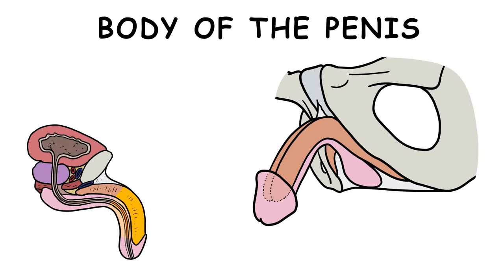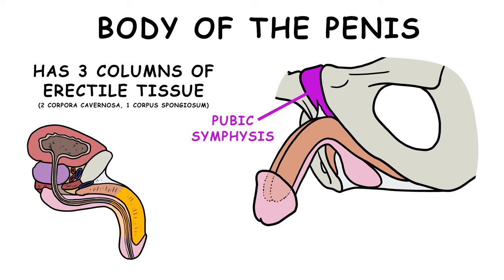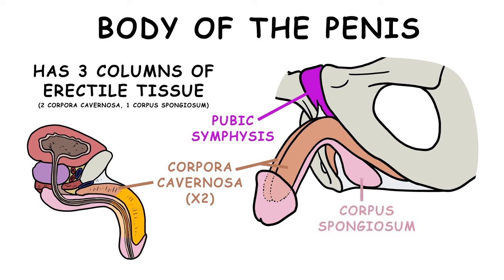The body of the penis is suspended from the pubic symphysis, which is a joint between your right and left pelvic bones. It is composed of three columns of erectile tissue. Extending from the two crura in the root of the penis are a pair of corpora cavernosa, found along the sides of the penis. Extending from the bulb in the root of the penis is the corpus spongiosum, which runs along the bottom of the penis.